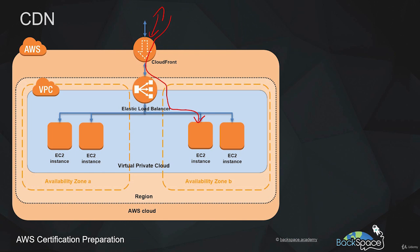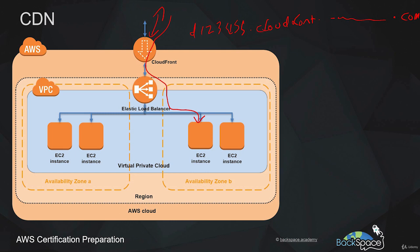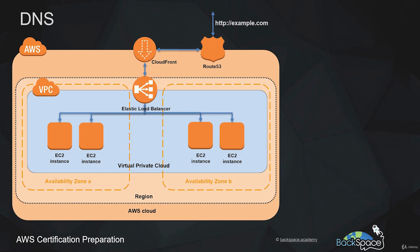That CloudFront distribution will have its own DNS name that we can put into a browser, but it will be something very complicated and won't mean anything to our end user. So we'd prefer our end user to type in a domain name and have that request forwarded to the CloudFront service. That is where Route 53 comes in — it grabs requests for your domain, such as example.com, and forwards them to the CloudFront service, which handles it from there.